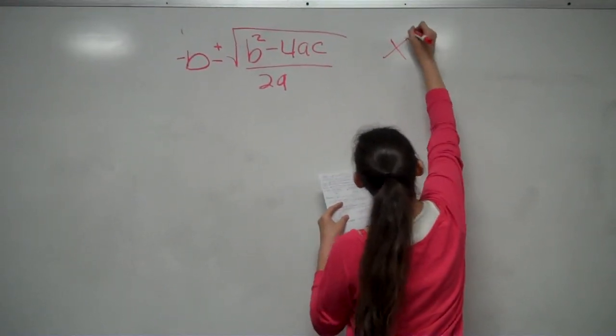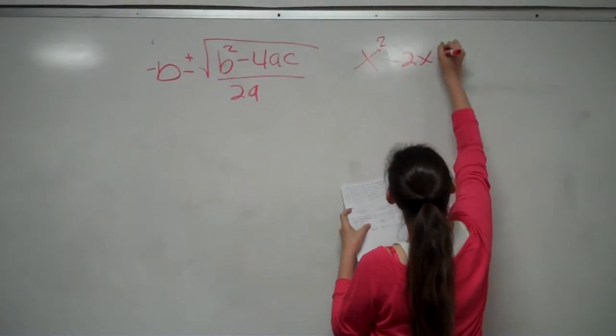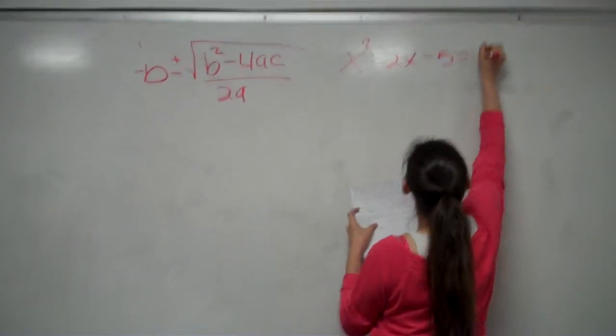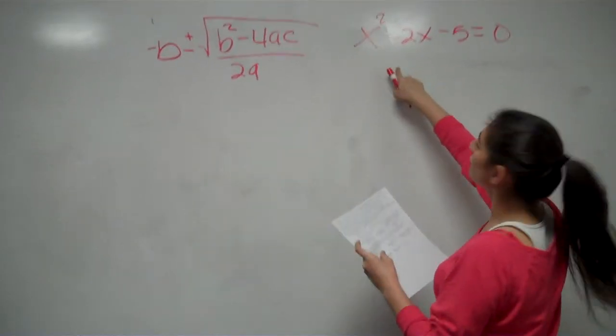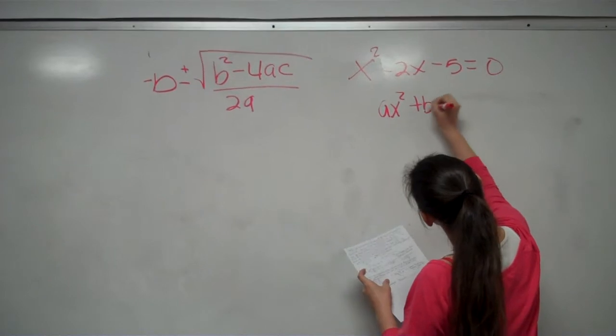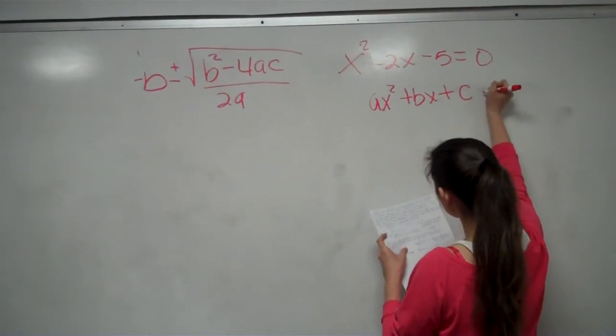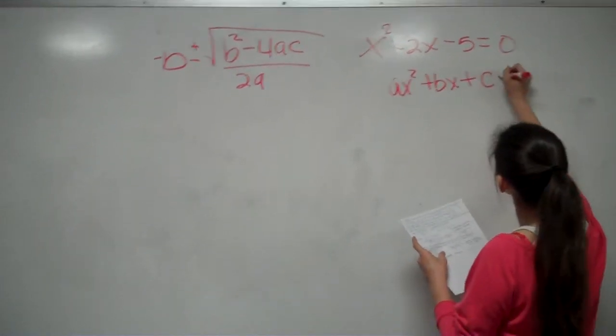So this is the problem we'll try to solve: X squared minus 2X minus 5 equals 0. This is written in the form of AX squared plus BX plus C equals 0.